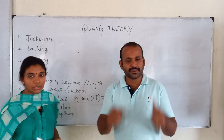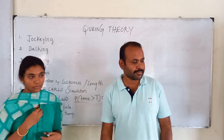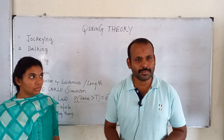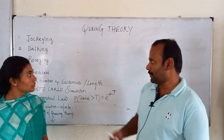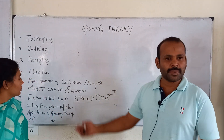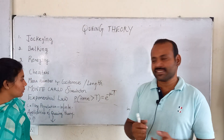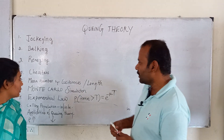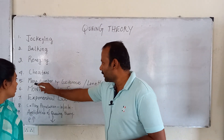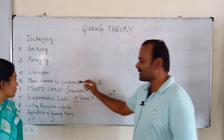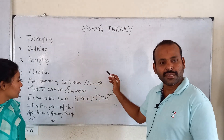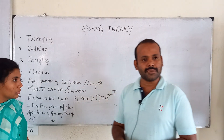Okay, thank you, champions. Thank you, Ms. Ramya. You answered all this. You have to make a small correction. The fifth one — mean number of customers — is called the length of the system.